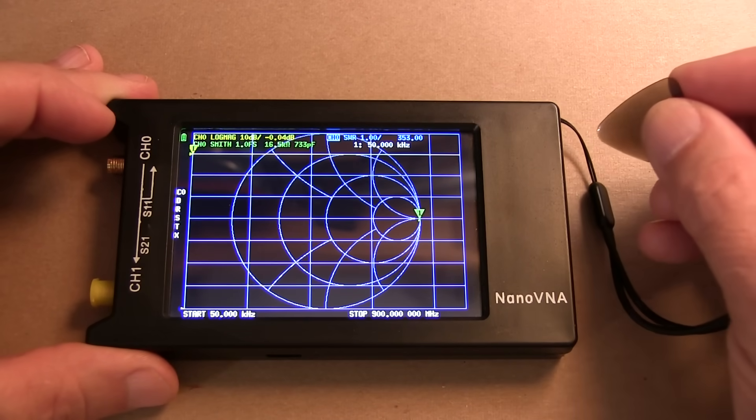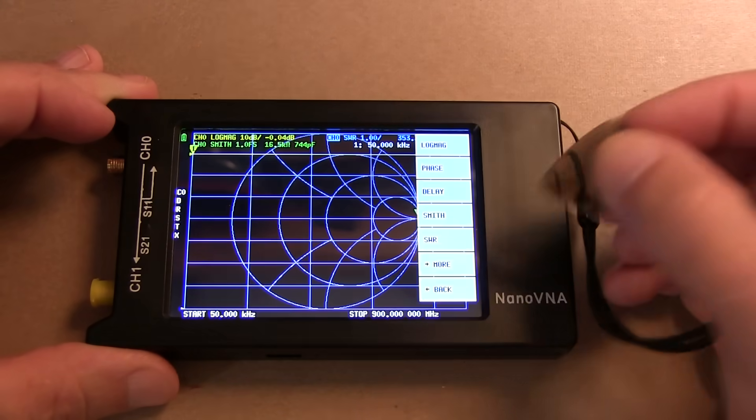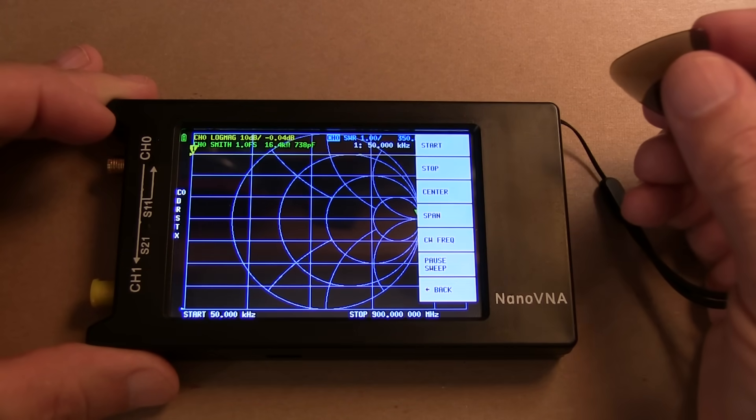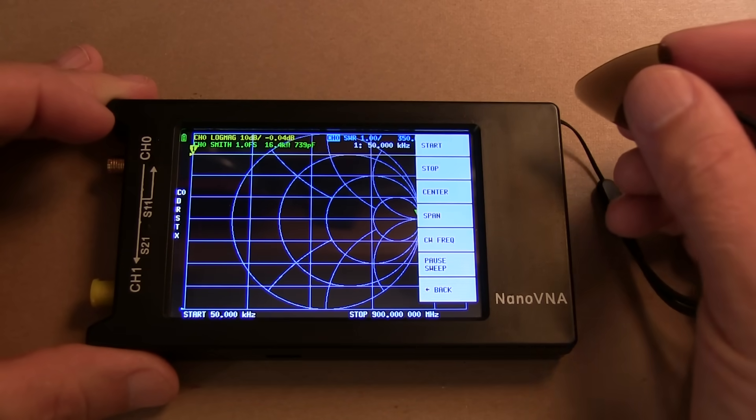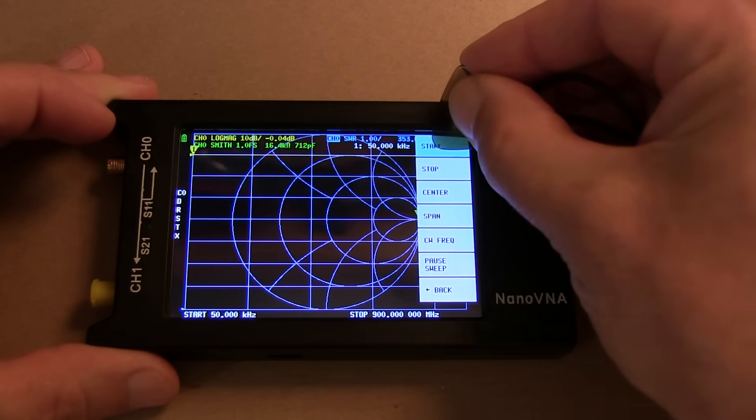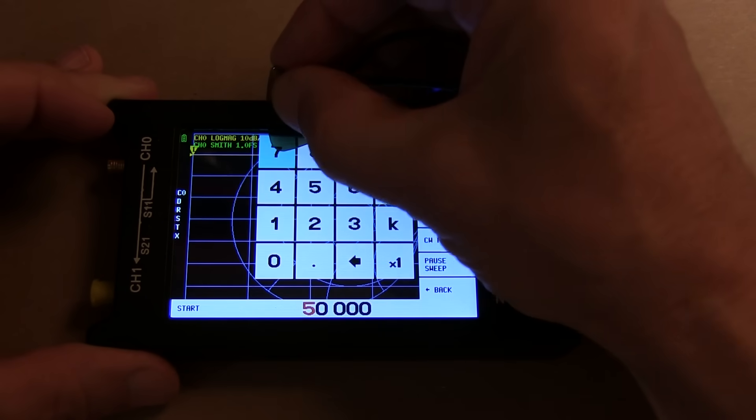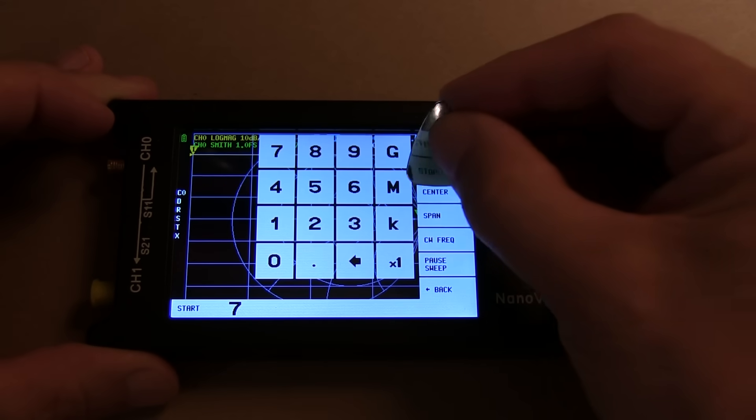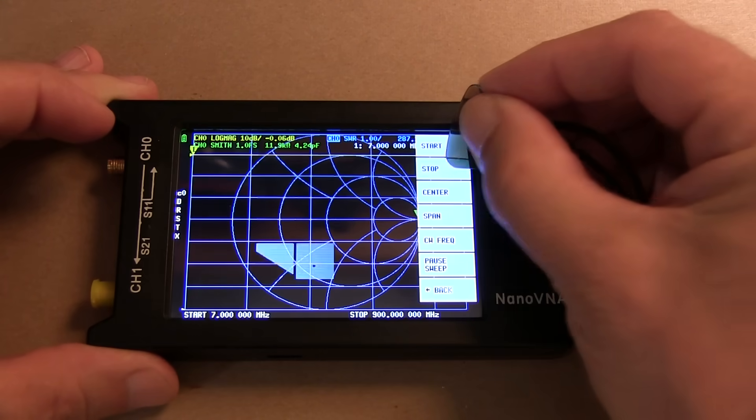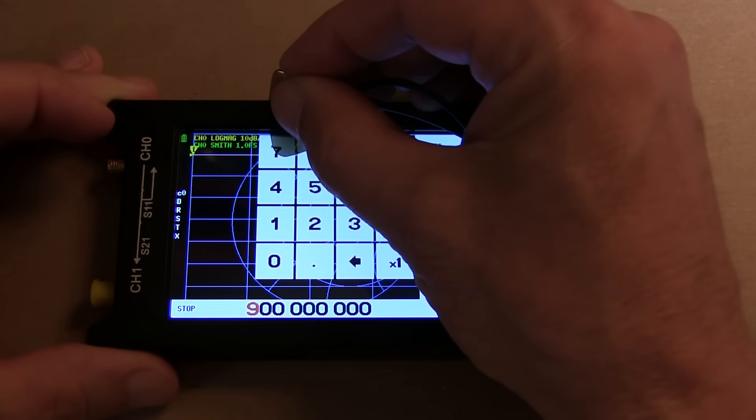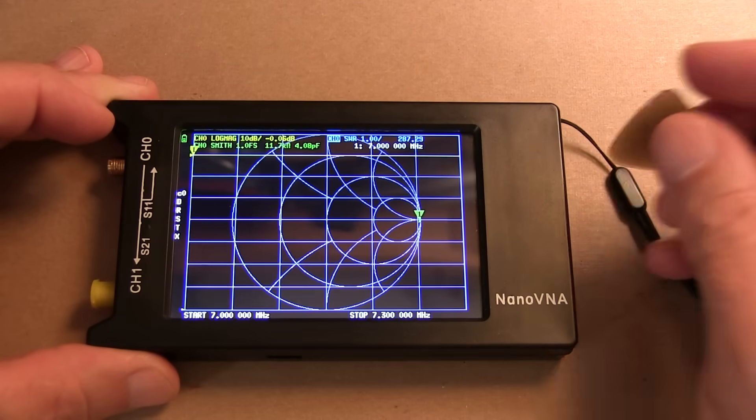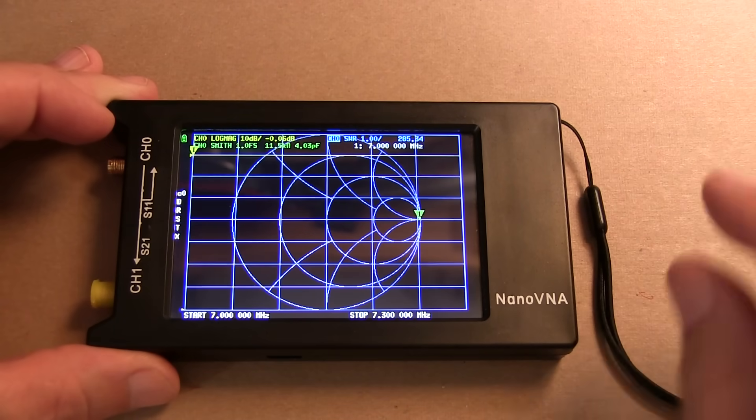Next let's set up the frequency range we want to test. So bring our menu back up, and go back, and back again, and go to stimulus. In our case I want to measure the 40 meter amateur radio band from 7 megahertz to 7.3. So I touch on the start frequency and I dial in 7m for megahertz. That will set up the start frequency. And then we'll go back in and select the stop frequency, 7.3 megahertz. And now we've set up the stimulus range that we want to test.